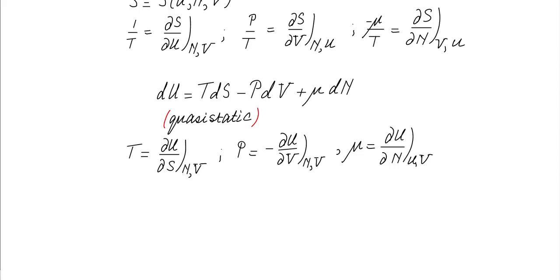From this law, we immediately find that temperature T is the partial derivative of U with respect to S, pressure P is the partial derivative of U with respect to V, and mu is the derivative of U with respect to N. In equilibrium, these variables assume the value which maximizes the entropy — that's how we find T, P, and mu.